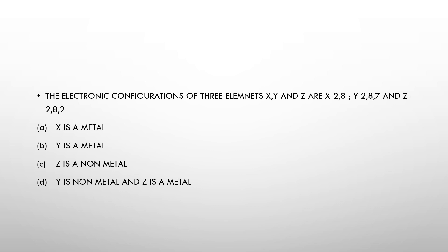The third question: the electronic configurations of three elements X, Y, and Z are — X: 2,8; Y: 2,8,7; and Z: 2,8,2. Element X with configuration 2,8 is a noble gas. Element Y with configuration 2,8,7 is a non-metal. Z with configuration 2,8,2 is a metal. So the answer is Y is a non-metal and Z is a metal.